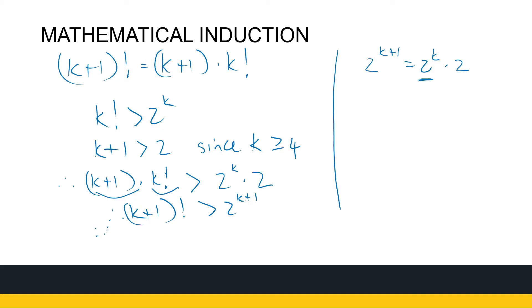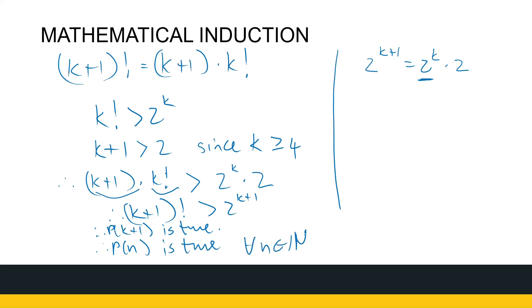So we can conclude that P(k+1) is true, and therefore P(n) is true for all natural numbers n greater than or equal to 4. This example looks a little different, but the process of mathematical induction stays the same.